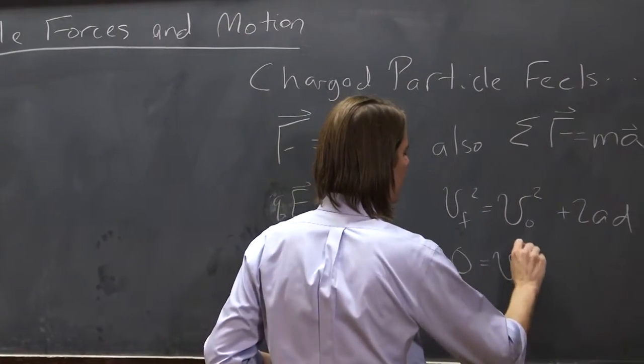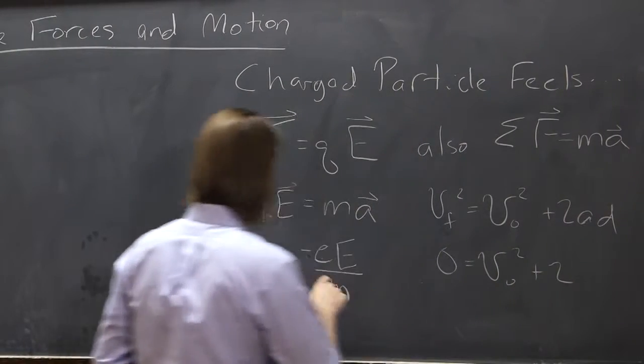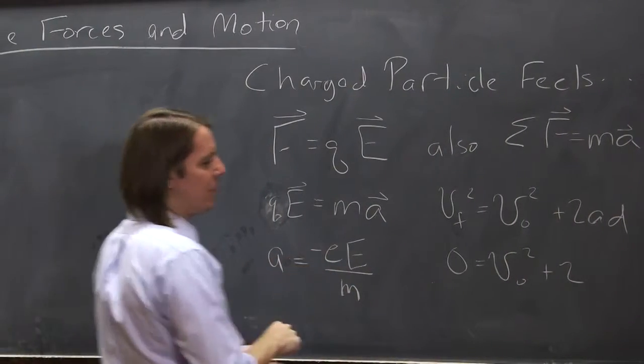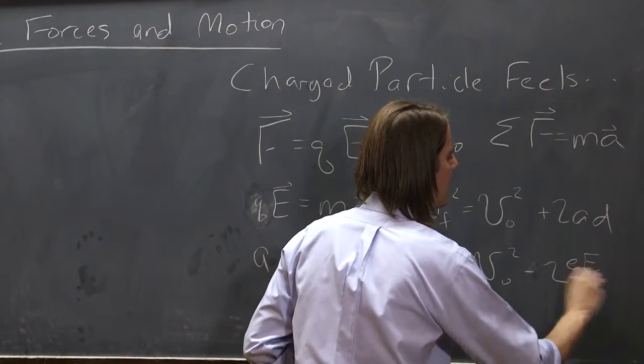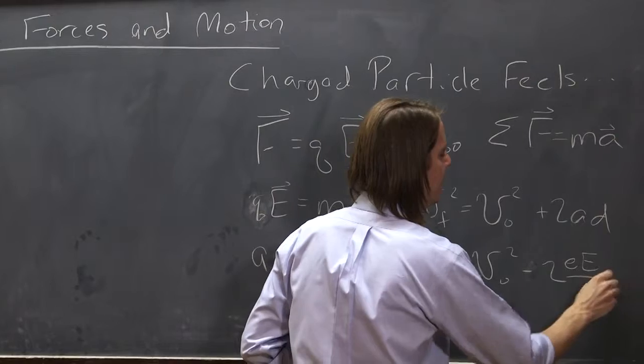v naught is given in our problem, plus 2. The acceleration is minus ee over m. So I'll just put the minus right there, ee over m. And then d is what we're looking for.